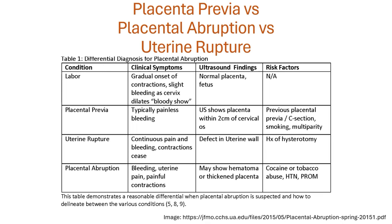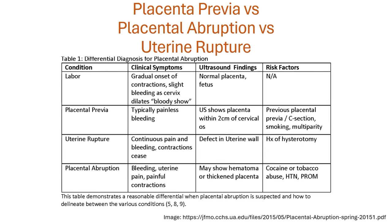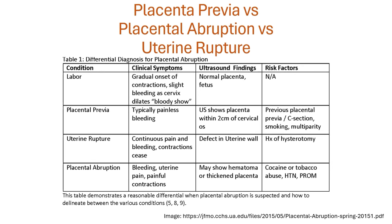Regarding risk factors: placenta previa risk factors include a previous history of placenta previa, cesarean section, smoking, or multiparity. For uterine rupture, a history of hysterotomy — where 'hystero' means uterus and 'otomy' means creating an opening — such as from a diagnostic or laparoscopic procedure, or a previous cesarean section scar, are key risks. For abruption, risk factors include cocaine use, tobacco use, hypertension in the mother, or premature rupture of membranes.